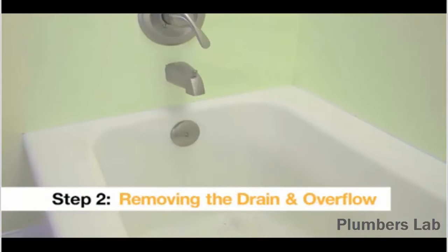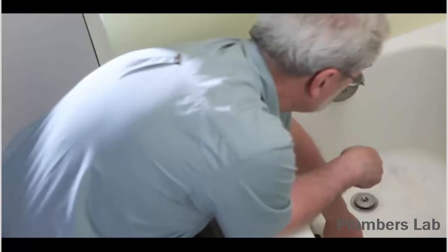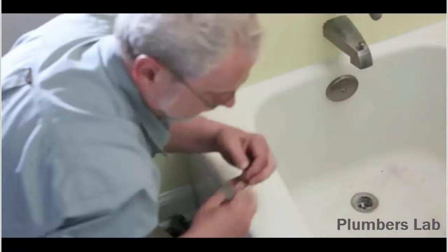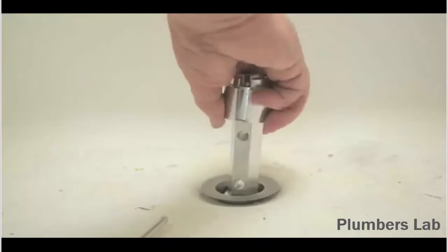Tub drains will have different components that first need to be removed. This one has a stopper that unscrews, providing access to the drain flange at the bottom of the tub. The flange itself will need to be unscrewed using a tool designed for tub drain removal.